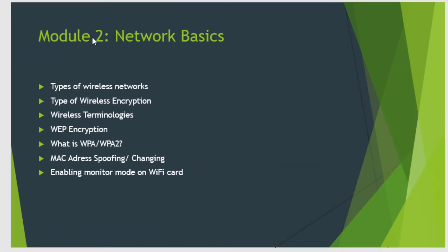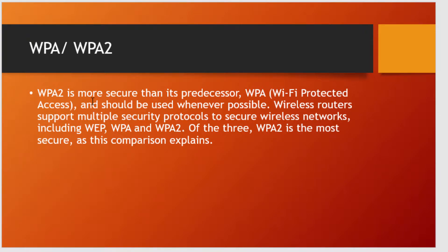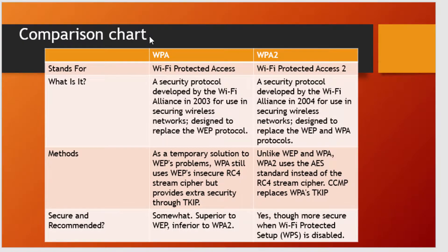Welcome back. This is module 2, network basics. In this lecture we will learn about WPA and WPA2. WPA is more secure than its predecessor WEP and is called Wi-Fi Protected Access. Wireless routers support multiple security protocols to secure wireless networks, including WEP, WPA, and WPA2. Of the three, WPA2 is the most secure, as the comparison chart explains.